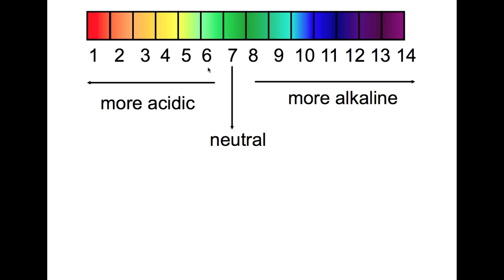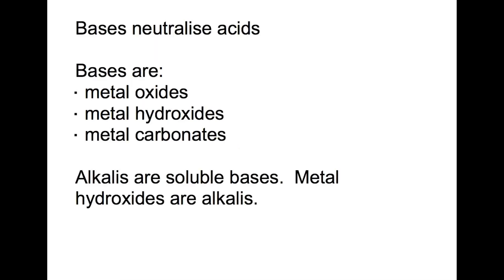So we're going to look at it from the point of view of taking an acid and trying to neutralize it. To neutralize an acid you need a base. Bases are metal oxides, metal hydroxides, or metal carbonates. These will all neutralize acids.